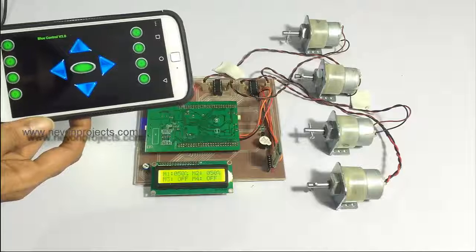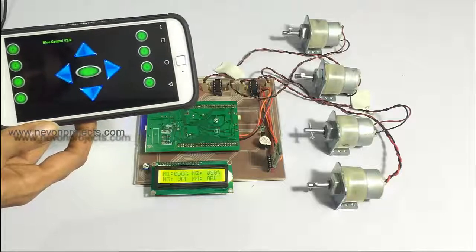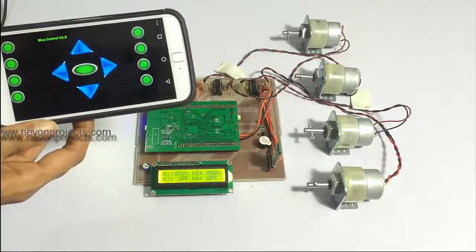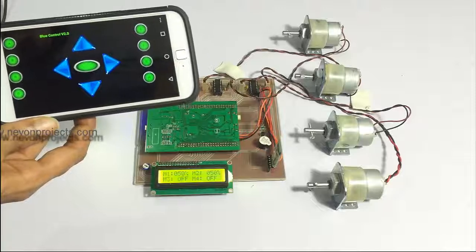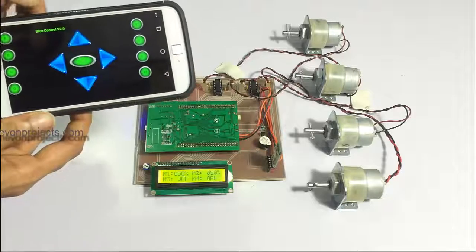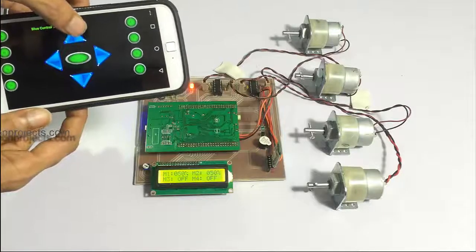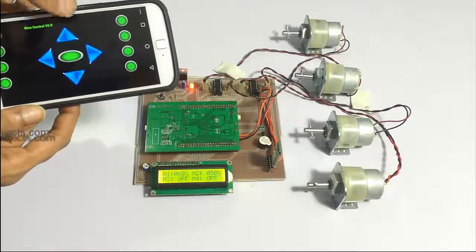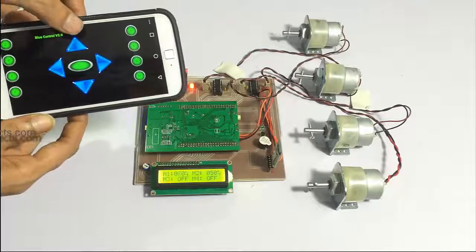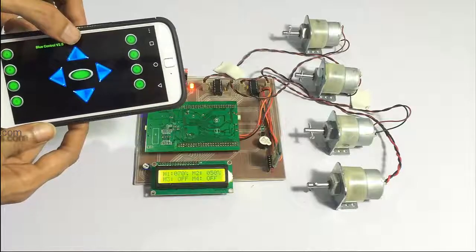Now once we have turned on the load we can vary their speeds by pressing the button and then the speed controller. The speed of the motor is also displayed as a percentage on the LCD display as you can see here.